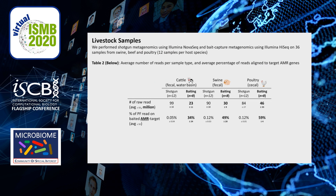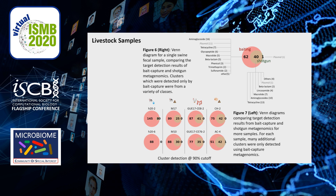We also performed bait capture and shotgun sequencing on 36 livestock samples from three different species. This table shows the total number of reads aligned to AMR targets from each sample type, and a much higher percentage of total sequence reads align to AMR targets with bait capture than with shotgun. These Venn diagrams show examples for a few samples: in every single sample, more target clusters were detected with bait capture versus shotgun sequencing. The additional clusters detected by bait capture come from a variety of AMR classes, and in most samples every cluster detected by shotgun was also detected via bait capture.